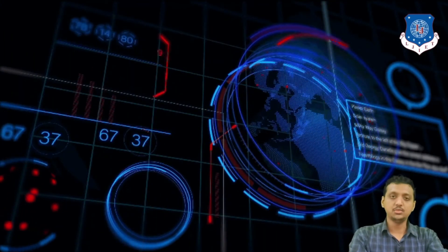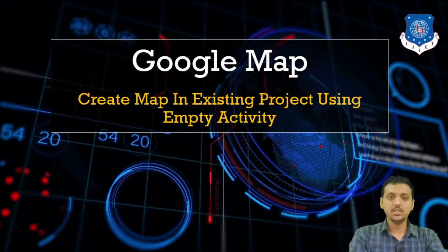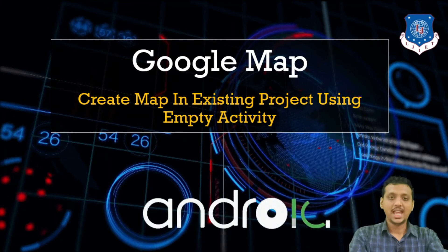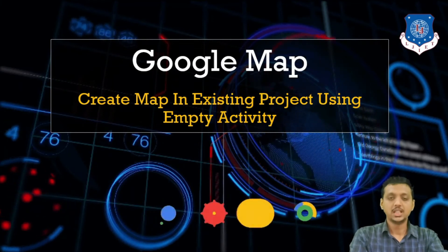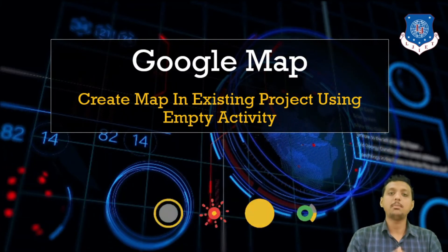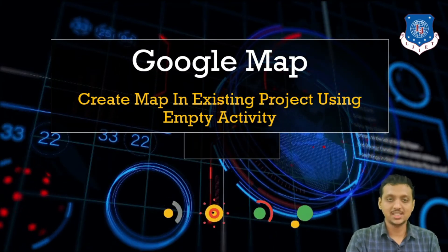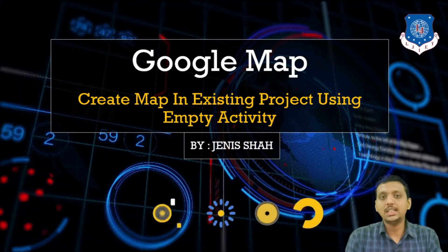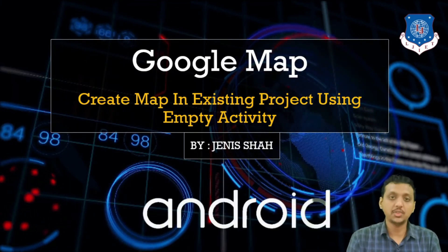Hello everyone, and welcome to the video lecture series of mobile application development. In our previous session, we have seen how we can implement location-based services, as well as what we mean by geocoding and reverse geocoding. Now it's time to learn about how we can implement Google Maps in our program. Welcome once again to the video lecture series. This is your instructor, Janice Shaw. Let's begin to understand how we can integrate Google Maps by opening a project which does not contain the Google Map activity by default.